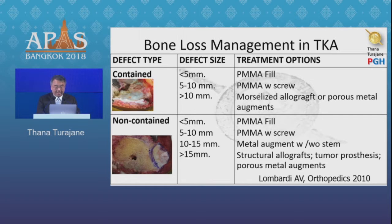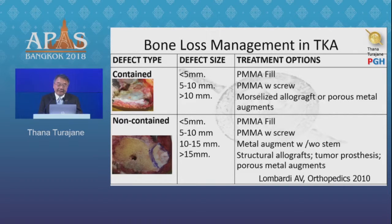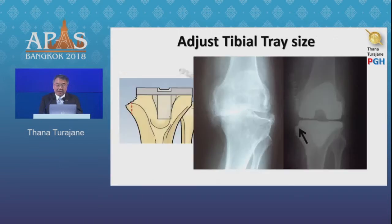When the defect is non-contained and more than 10mm, a stem must be considered. But in some neglected cases — such as post-traumatic cases that happened a long time ago and the patient comes to see you late — some centers need to use structural allograft, tumor prosthesis, or some special implant with a special stem.